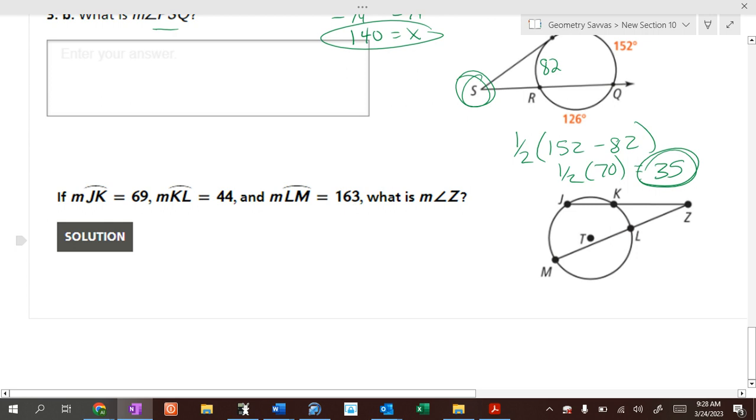All right, last problem, and then I'll hand out the worksheet because we're just doing a worksheet today, we're not doing Savas, just a worksheet instead. JK is 69, so this arc right here is 69. KL, this little arc in here, is 44. LM is 163. So how do I find JM? What would you do, Caden? If you knew this was 69, this was 44, and this was 163? Add them up. So if we add them up, we get 113 plus 163 is 276, right?